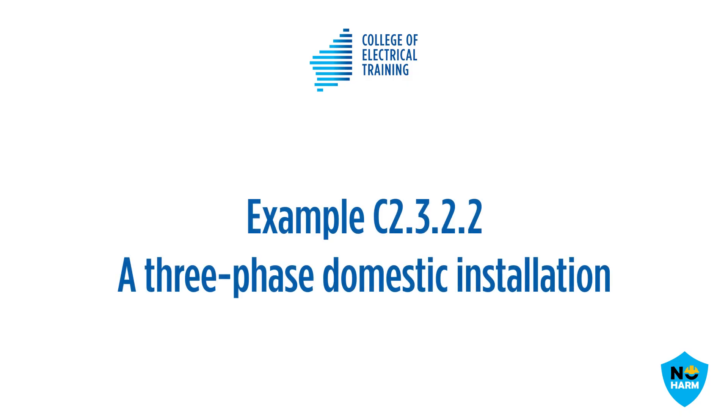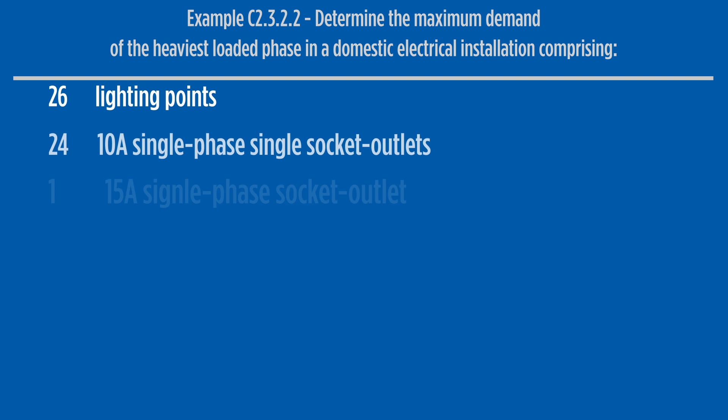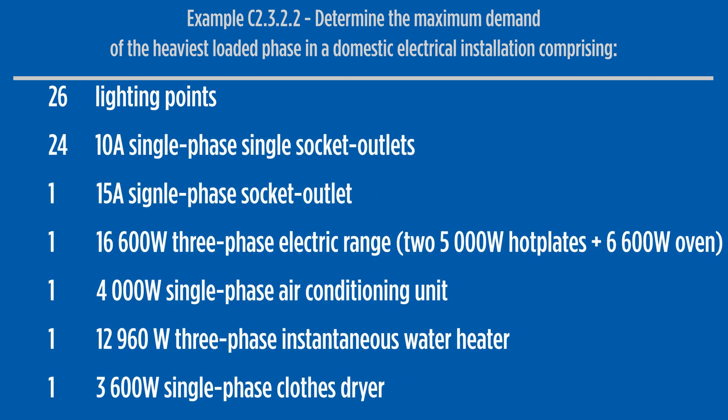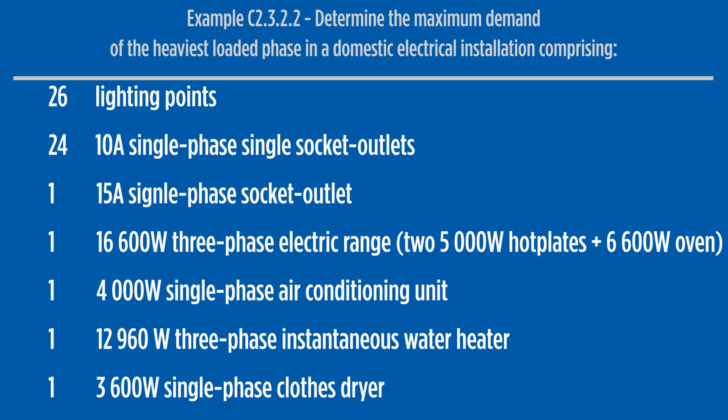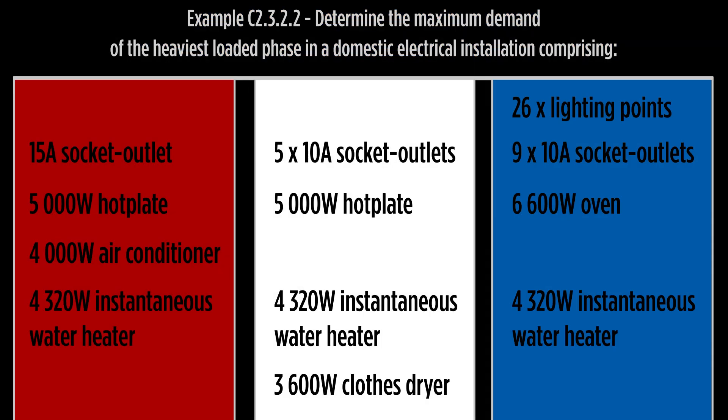Example C2322 gives an example of a single domestic dwelling with a three-phase supply and uses tables C1, columns 1 and 2, for calculation purposes. The process is the same as the previous example. However, loading is spread over three phases, and phase loading needs to be kept as close as practicable when calculating maximum demand.